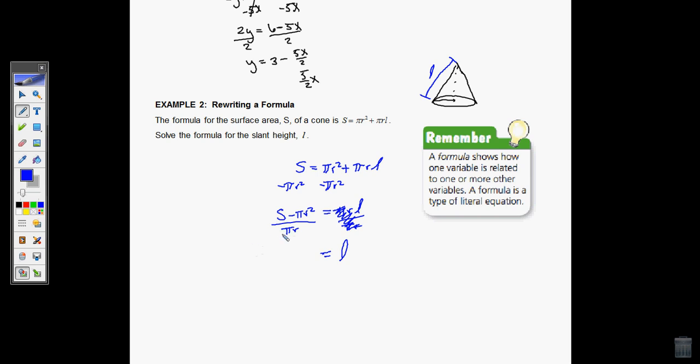And then over here we need to do some division. Can I divide S by pi over R? Not really. I don't necessarily know what S is, I don't really know what R is, so I have to kind of leave it as S over pi R. Now, can I divide pi R squared by pi R? I can. Pi over pi makes them go away because pi divided by pi is 1, but R squared over R leaves me with just R. Because there's two of these R's multiplying up top, there's only one of the R's multiplying down here. So S over pi R minus R equals slant height. Very good.